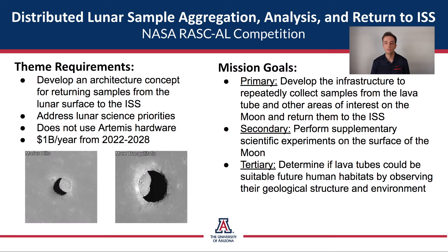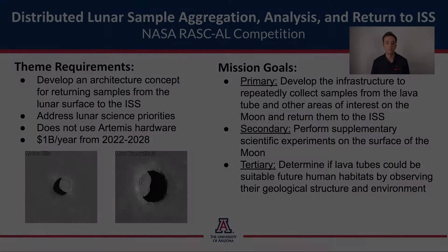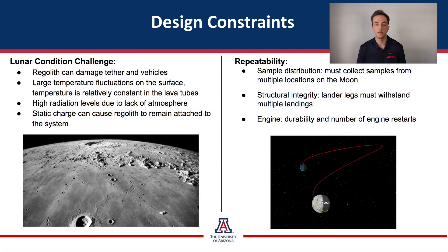This theme required us to develop an infrastructure for repeatedly collecting lunar samples from different areas of interest on the moon. We quickly identified lunar lava tubes because they have been unexplored and they preserve samples well. As we began brainstorming ideas, lunar conditions were quickly identified as a significant constraint because of the sharp regolith, radiation, and temperature concerns, especially during a lunar night. These conditions put limitations on how and when we can access these lava tubes via their skylight to collect samples.